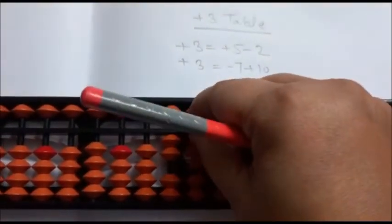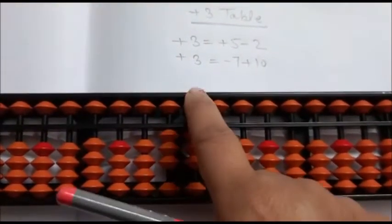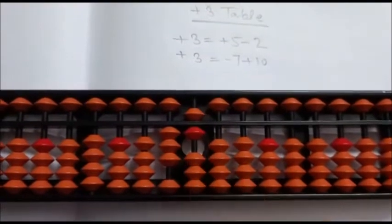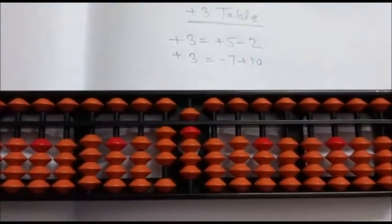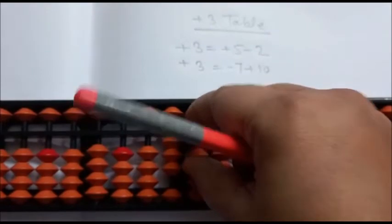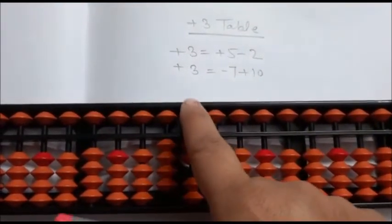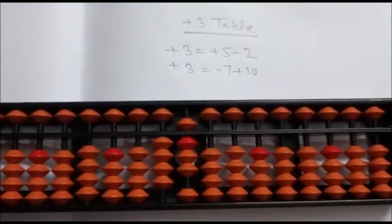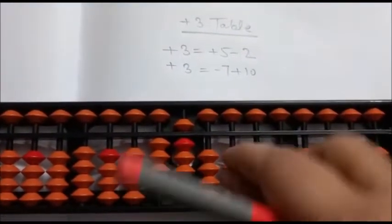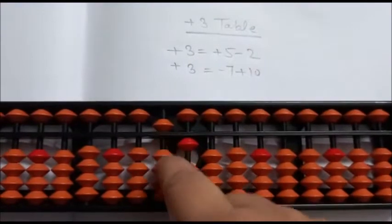Again, plus 3: minus 7 plus 10. Again, plus 3 is direct. Again, plus 3: plus 5 minus 2. Again, plus 3 is direct. Again, plus 3: minus 7 plus 50 minus 40.